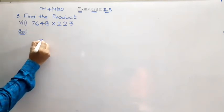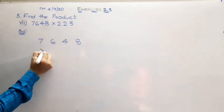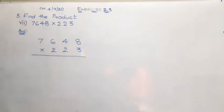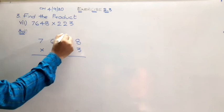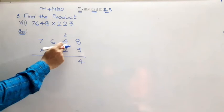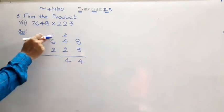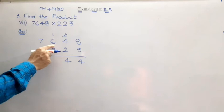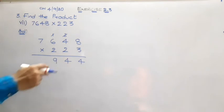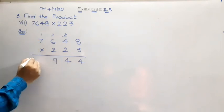So 7, 6, 4, 8 multiplied by 223. Okay, so 3 times 8 is 24. 3 times 4, 12. 12 plus 2 is 14. So 4 here and then extra one here. 3 times 6 are 18. 18 plus 1 is 19. Next, so the extra one. 3 times 7 are 21. 21 plus 1 gives us 22.